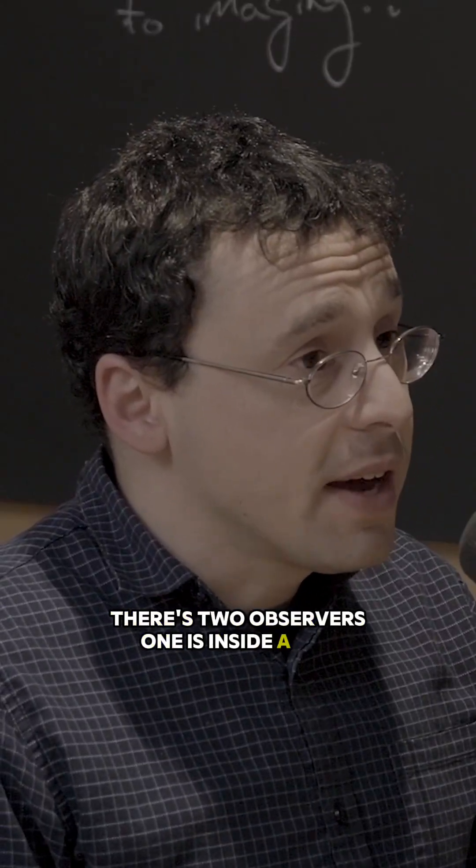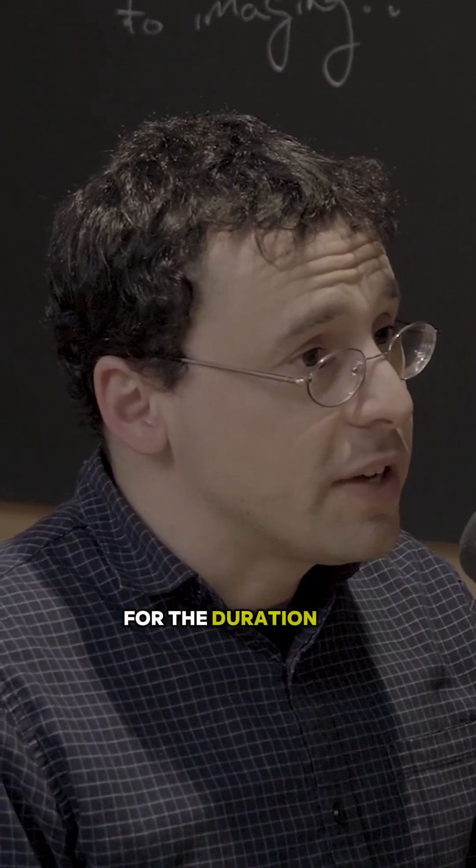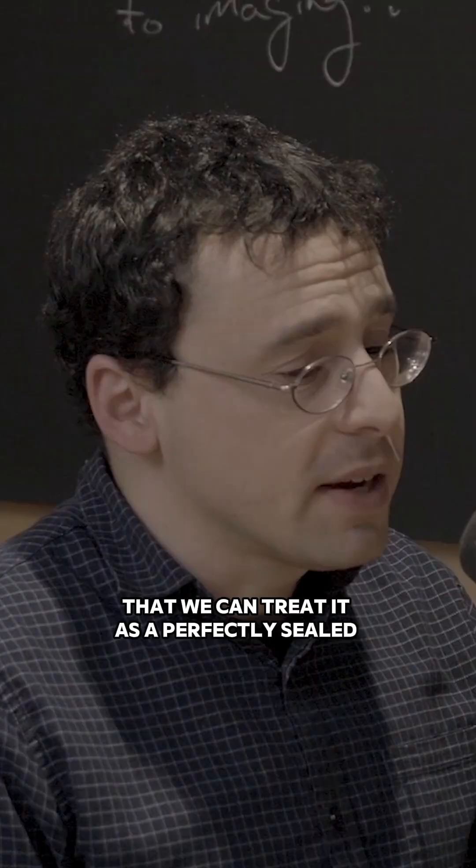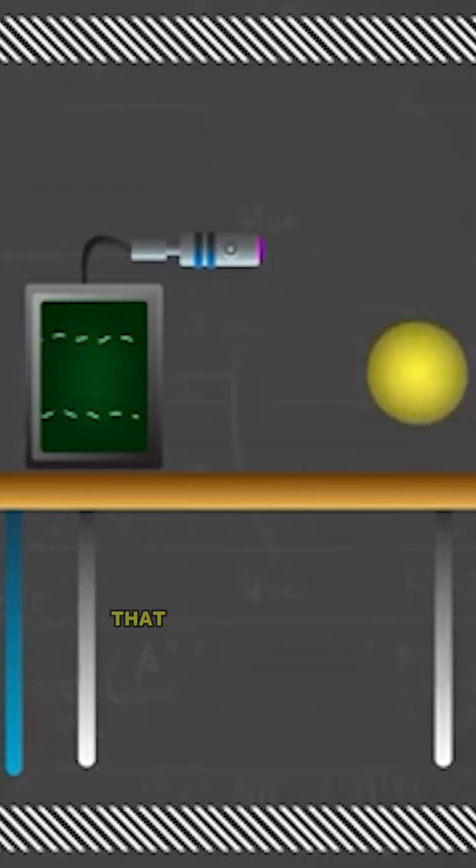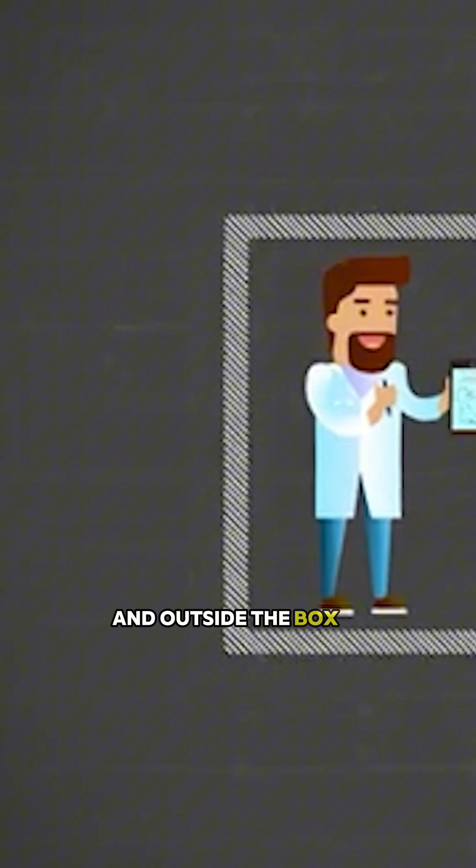There are two observers. One is inside a box that is sufficiently sealed for the duration of the experiment that we can treat it as a perfectly sealed box. Inside the box is an observer called Wigner's friend with some quantum system that Wigner's friend is measuring, and outside the box is Wigner.